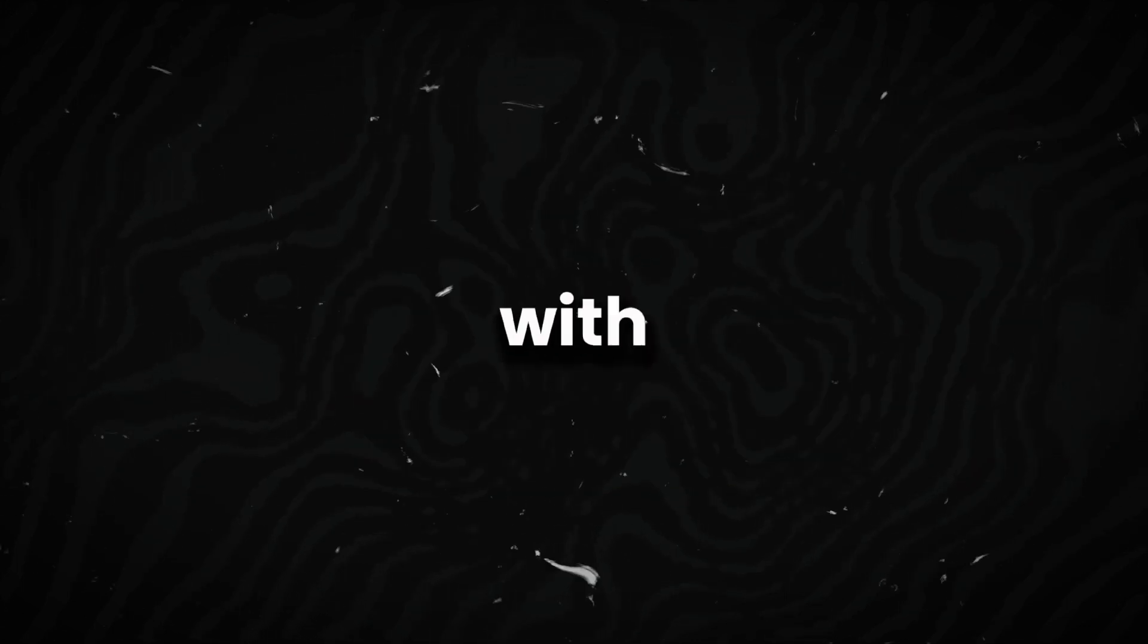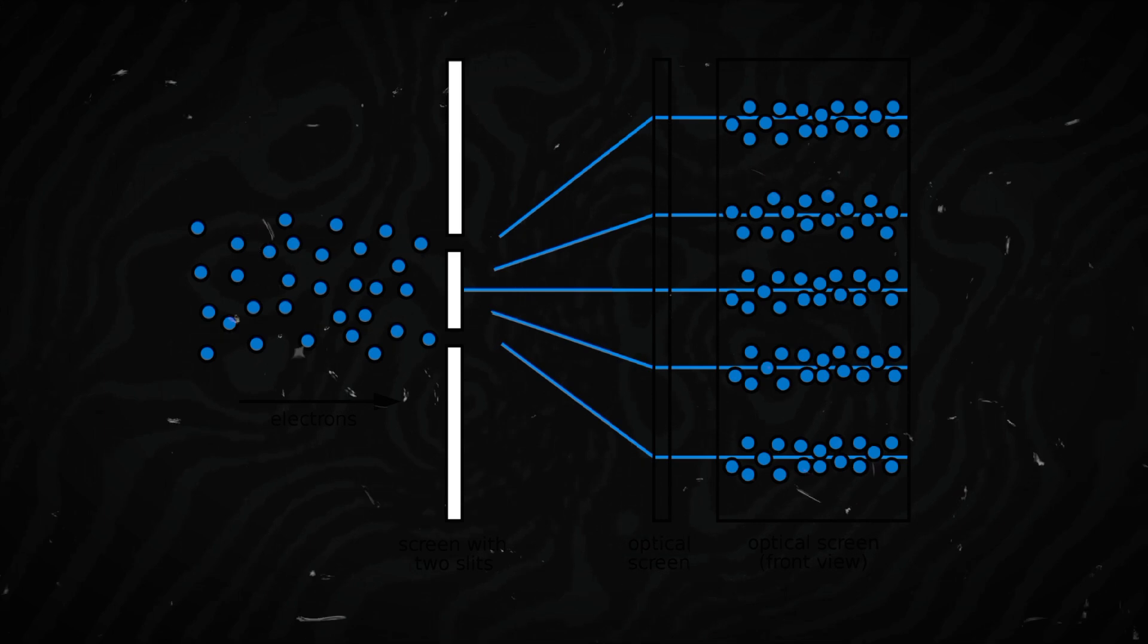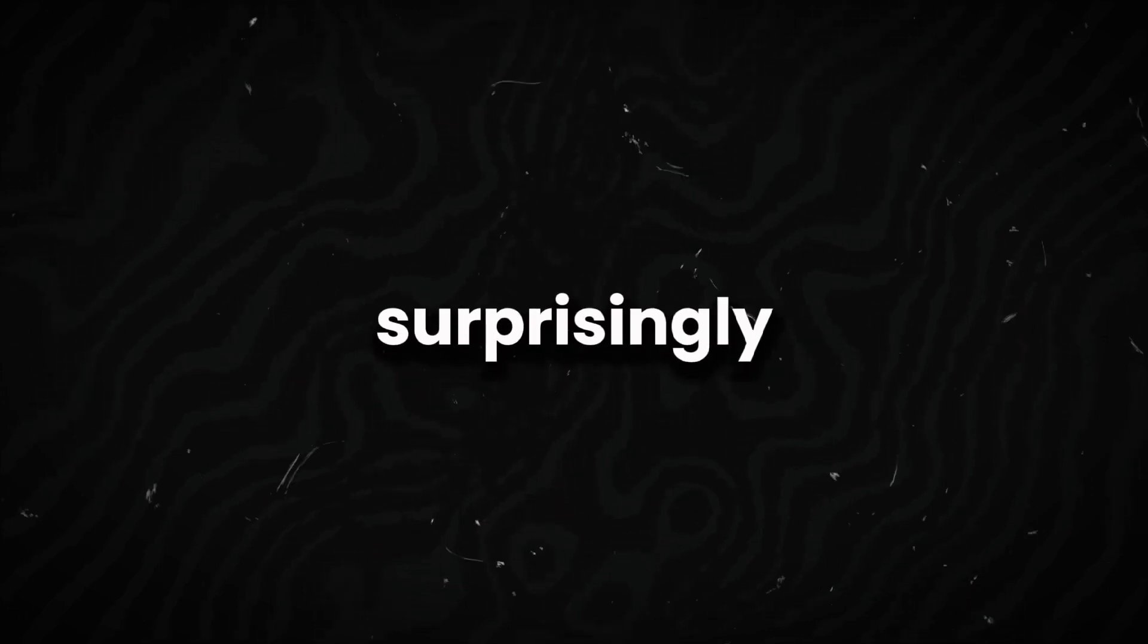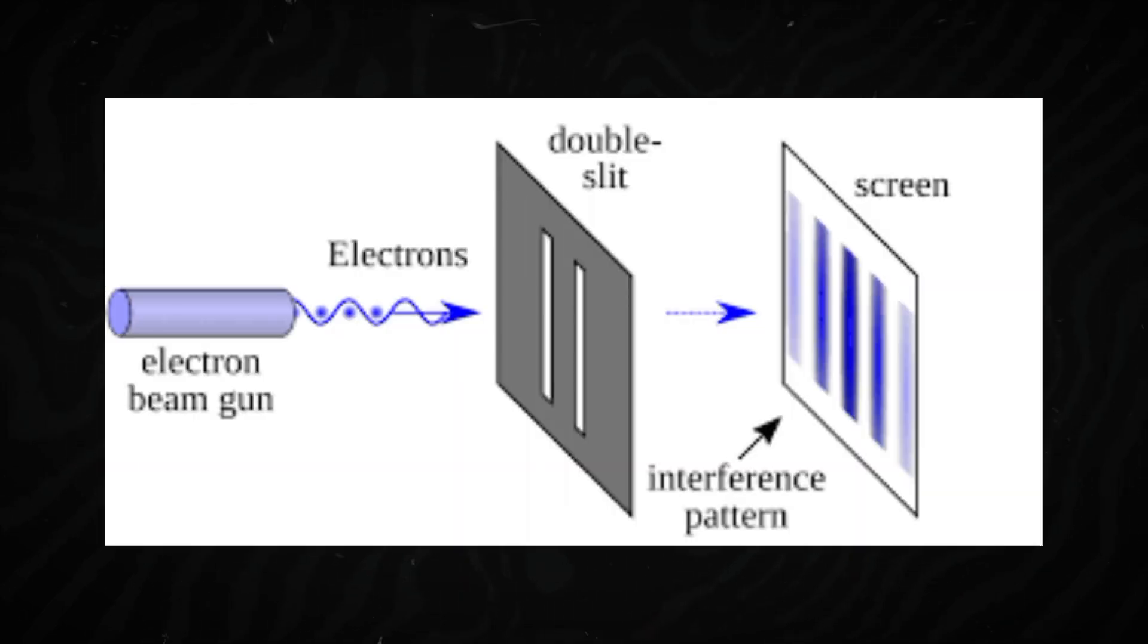Imagine you have a wall with two slits, and you shoot particles like electrons at it. What would you expect to see on the screen behind the wall? Surprisingly, instead of seeing two bands, one behind each slit, you get an interference pattern, like the ripples you see when you drop two stones in water.